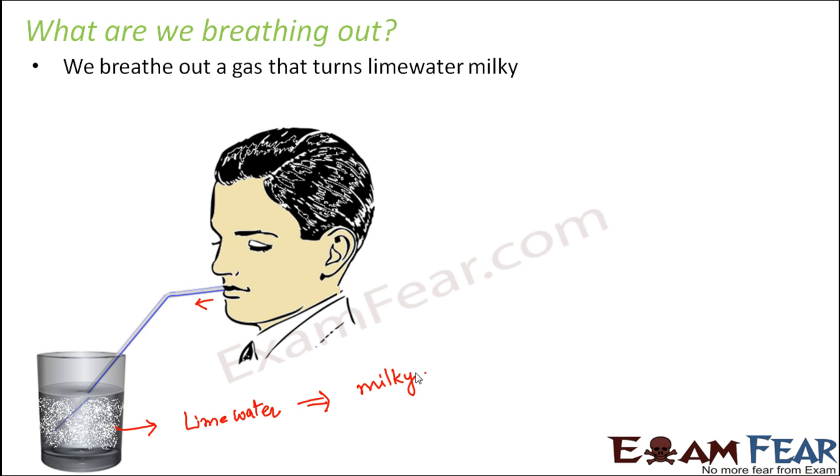A gas that turns limewater milky is nothing but carbon dioxide. So what actually happens inside is the limewater, which was calcium hydroxide, when it reacts with carbon dioxide it forms calcium carbonate.